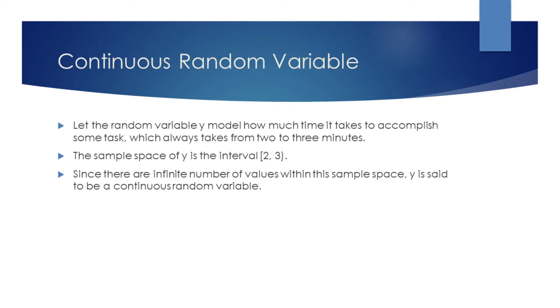Let the random variable y model how much time it takes to accomplish some task, which always takes from 2 to 3 minutes. Then the sample space of y consists of every possible time between this interval. There is an infinite number of values within this sample space, so y is said to be a continuous random variable.